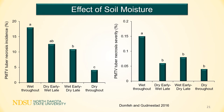These graphs demonstrate results from the same study evaluating PMTV tuber necrosis incidence and severity — those dark flecks, rings, and arcs in the tuber flesh. We have the same treatments: wet versus dry, early versus late. We see the same trends as with powdery scab and root galls, where decreased soil moisture is associated with decreasing tuber necrosis incidence and severity. These trials were done under controlled conditions in growth chambers, but similar trials demonstrate that managing soil moisture can help reduce economic losses due to tuber necrosis.